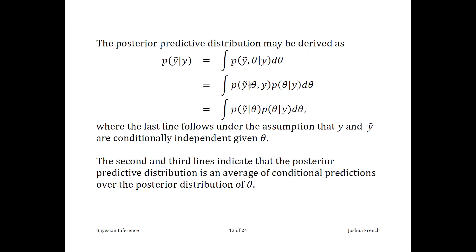Moving between the second and third lines, the only thing we've done is drop the dependence on y in that conditional distribution. The reason is that we can typically assume each realization from the data distribution is independent of every other realization, given the value of theta. Even if that's not true, the math on lines one and two still works — you just can't simplify to the third line. This set of equalities gives us a way to simulate data from our posterior predictive distribution: first draw a sample realization of theta from the posterior distribution, then conditional on that theta, draw a new observation from your data distribution. We're going to use this quite frequently when we do Markov chain Monte Carlo methods.